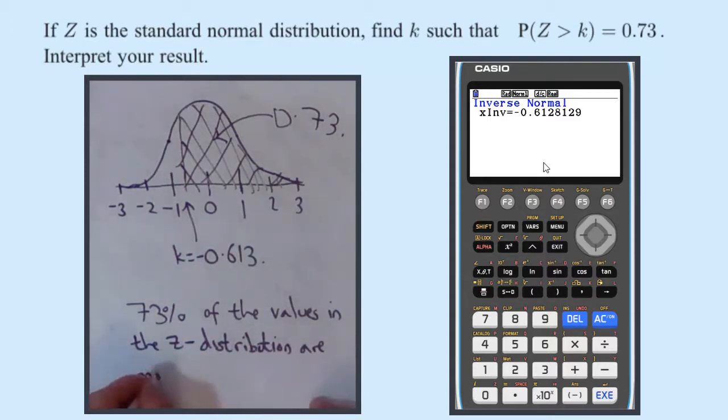are greater than minus 0.613. So that is an interpretation really but you're very unlikely to be asked for that. I do think the sketch is a very good idea. If you can get your head around the normal distribution it becomes really really easy.